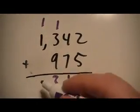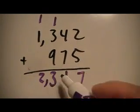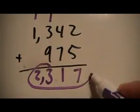Now one thousand plus one thousand is two thousand. We get our answer of two thousand three hundred seventeen.